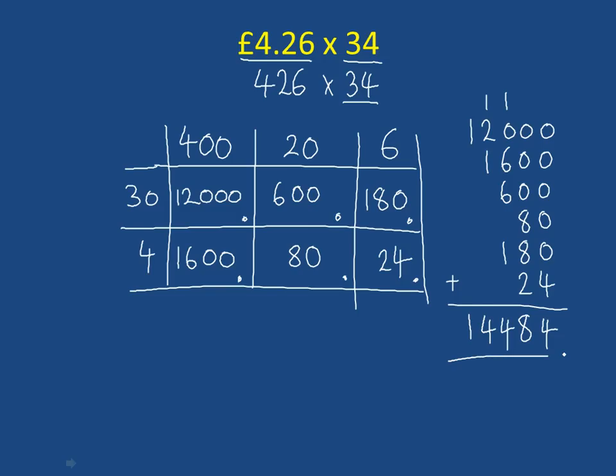However, we have to be really careful here because that's not our final answer. Our final answer had money, which had two decimal places. You can see it has a decimal with two numbers after it. So because it's money, we need to change this into having two decimal places. So we'll put our decimal place there to make it 84p at the end. So the answer is £144.84. So that is how you do a question with money. You change it into a normal number. So in this case, £4.26 changes into 426. And then you put the decimals back in at the end of the question.